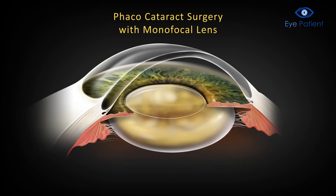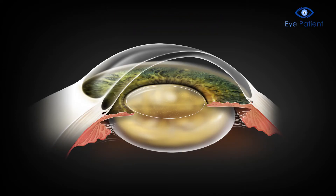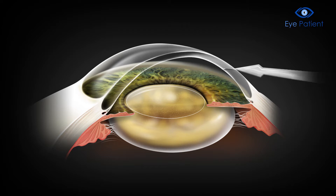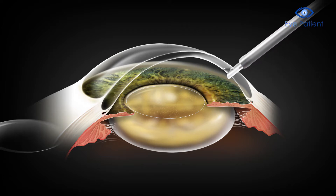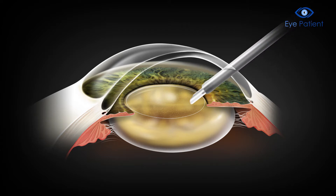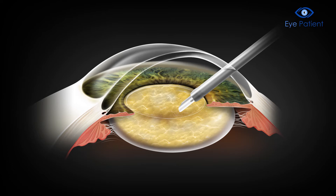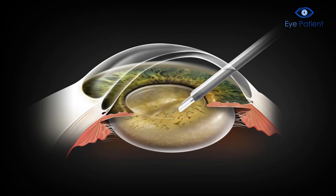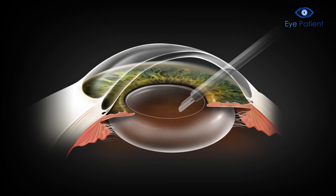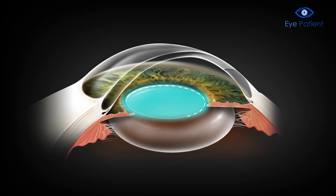Phaco Cataract Surgery with Monofocal Lens. Phaco emulsification surgery uses ultrasound energy to break up the cataract. The lens capsular bag, where the monofocal lens is implanted, is spared.